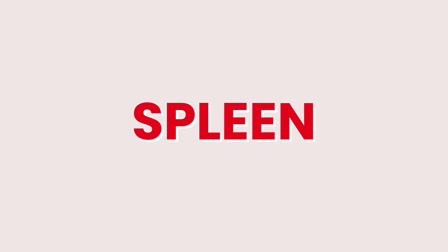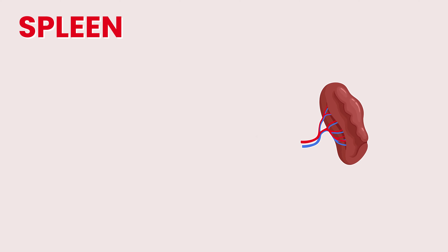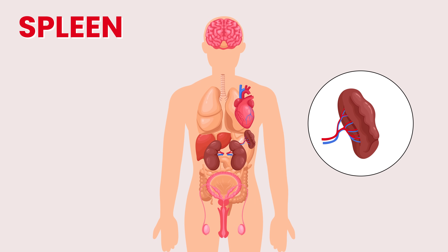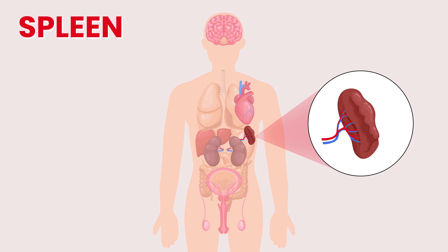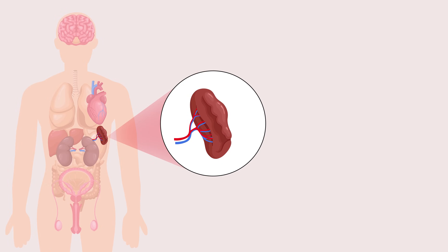Hi there, and welcome to Learn Hematology. This time, we focus on the spleen. The spleen is a small organ located in the upper left side of the abdomen.